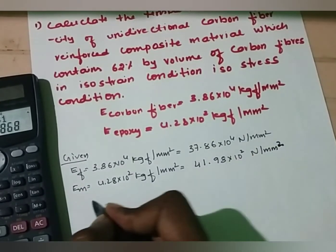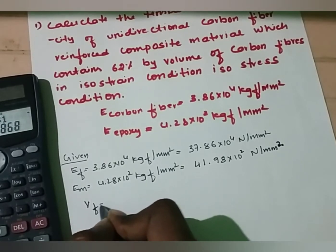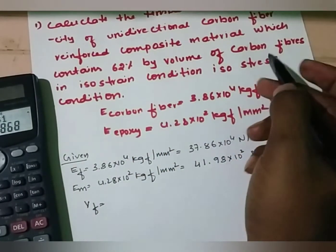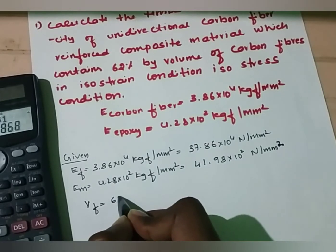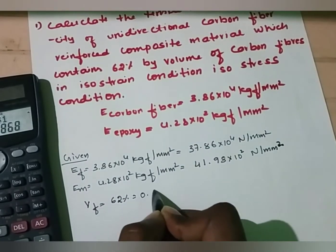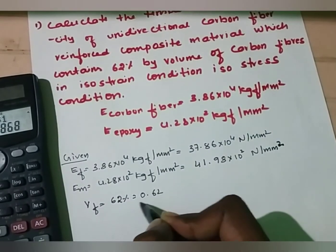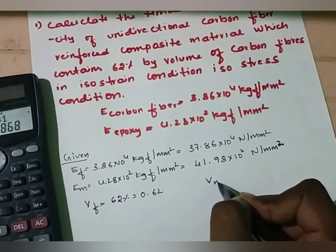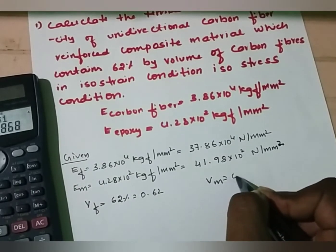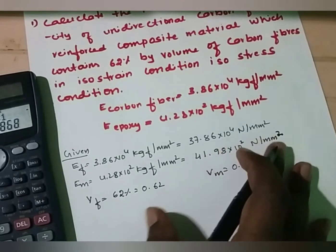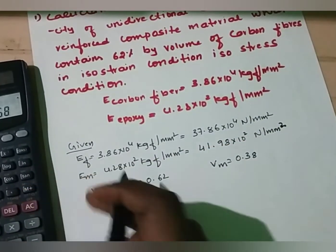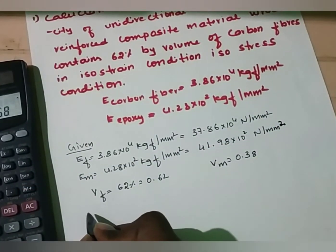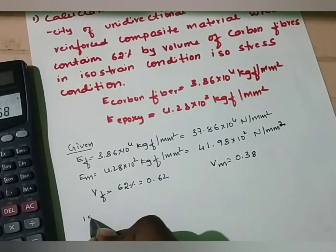Now, volume of fiber is given as 62% by volume of carbon fiber, that is Vf = 0.62. The remaining 38% will be the matrix, therefore Vm = 0.38. We have to calculate the tensile modulus of elasticity E at both isostress condition and isostrain condition.